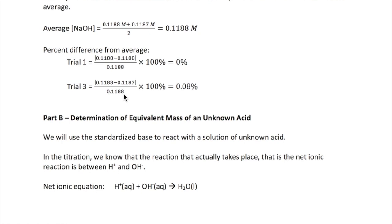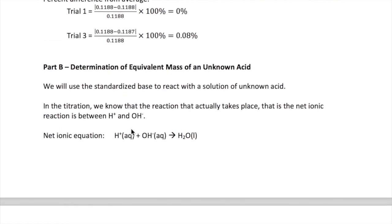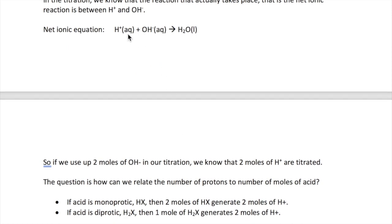Okay. Now that we have our standardized NaOH, we're ready to go to part B. Note that as I said earlier, the net ionic equation of this acid-base reaction is proton plus hydroxide goes to water. So what this equation tells us is that there's a one-to-one relationship between proton and hydroxide. What that means is, let's say we have two moles of hydroxide in our titration. That also means that we have titrated two moles of protons.